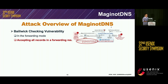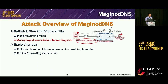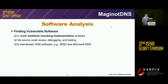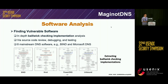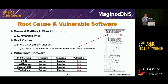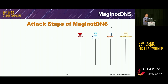The vulnerability details: in the forwarding mode, CDNS accepts all records in the response. We find that bailiwick checking for the recursive mode is well implemented, but the forwarding mode is not. We leverage the shared global DNS cache to exploit this vulnerability to attack the well-protected recursive mode. To find the vulnerability, we conducted an in-depth analysis of eight DNS software implementations, extracted their bailiwick checking logic, and found the root cause in the initial query function. Four DNS software were found vulnerable, including BIND9 and Microsoft DNS.